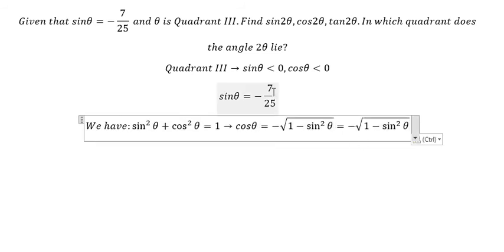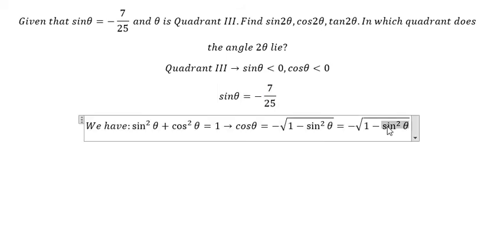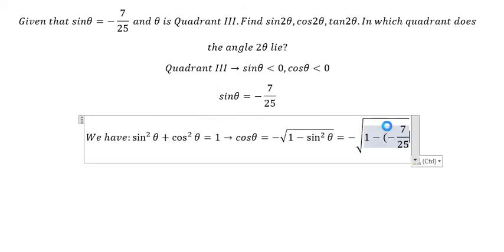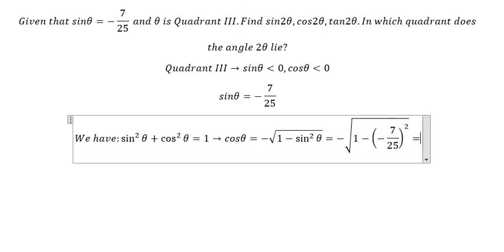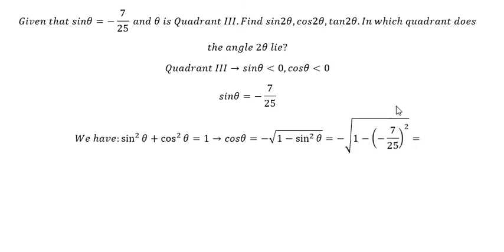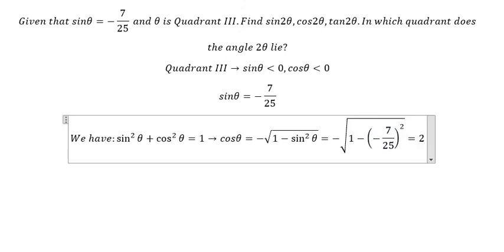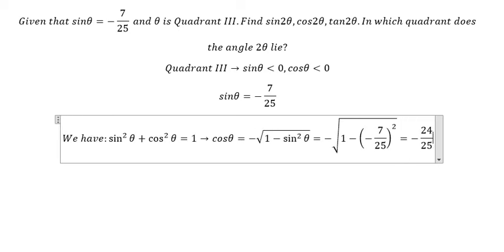So we substitute the value in and we get cos θ equals negative 24 over 25.